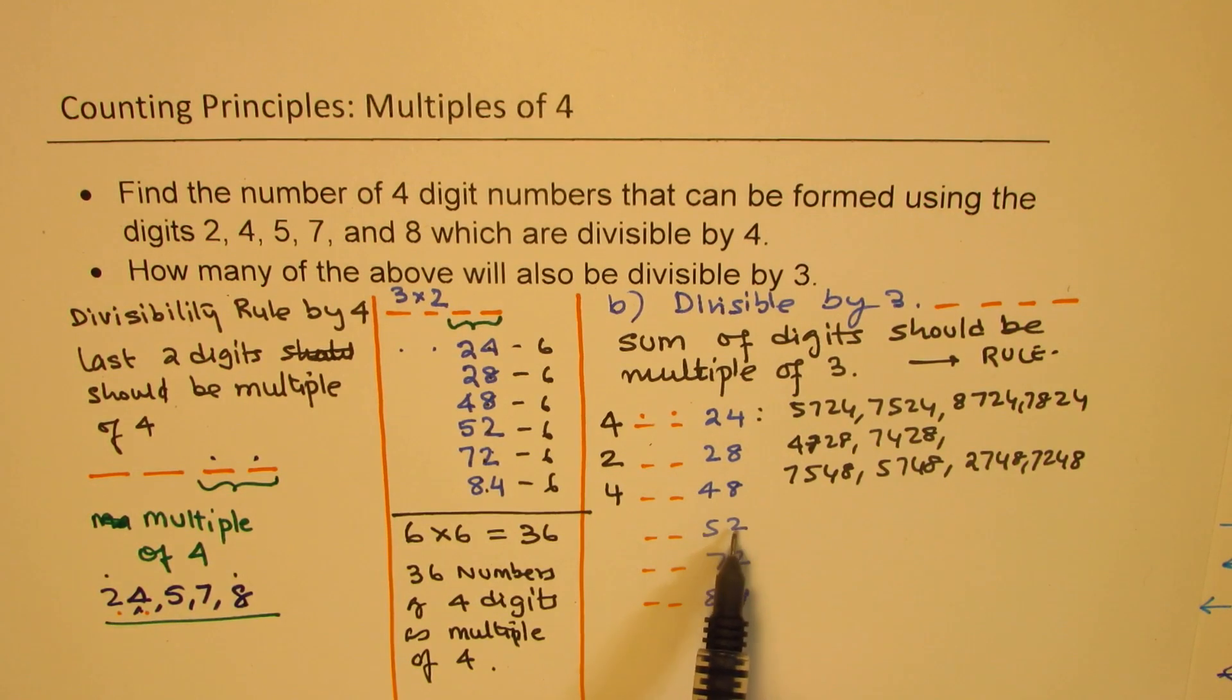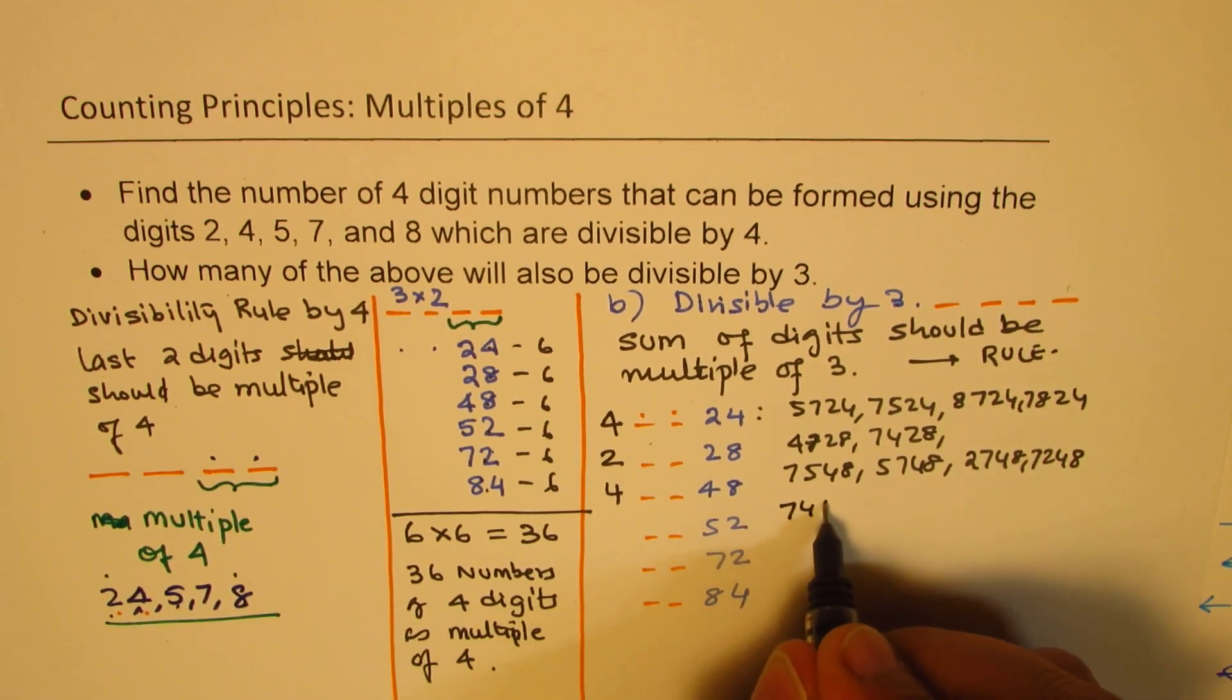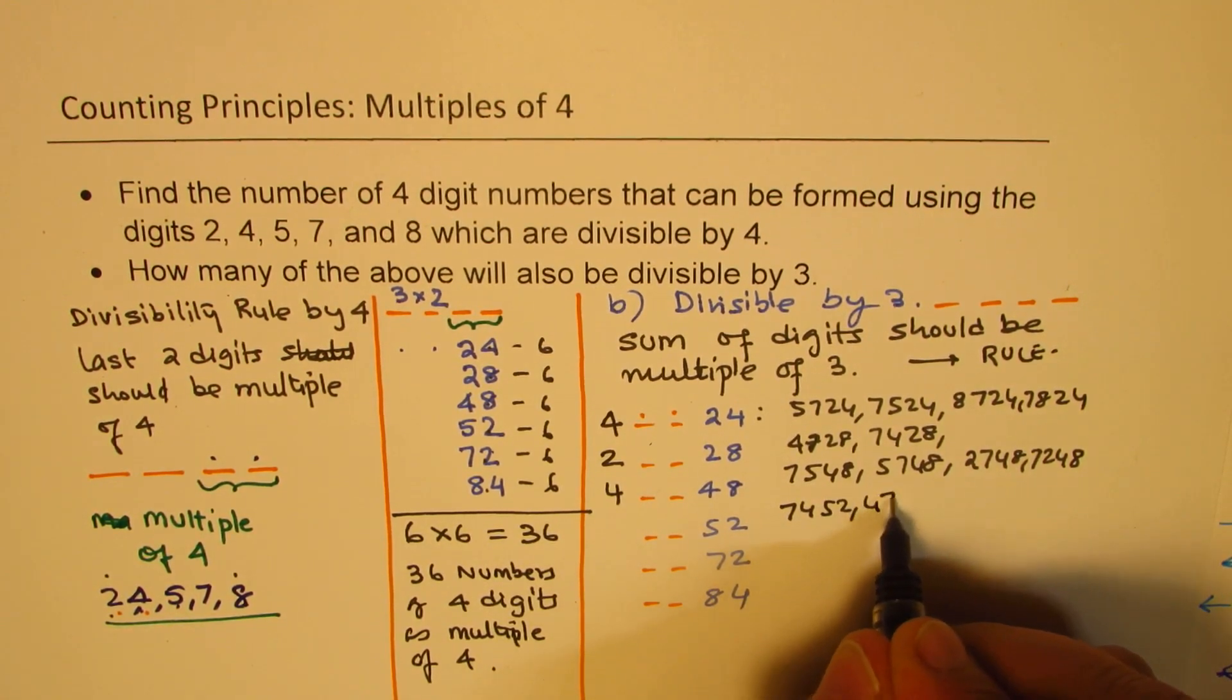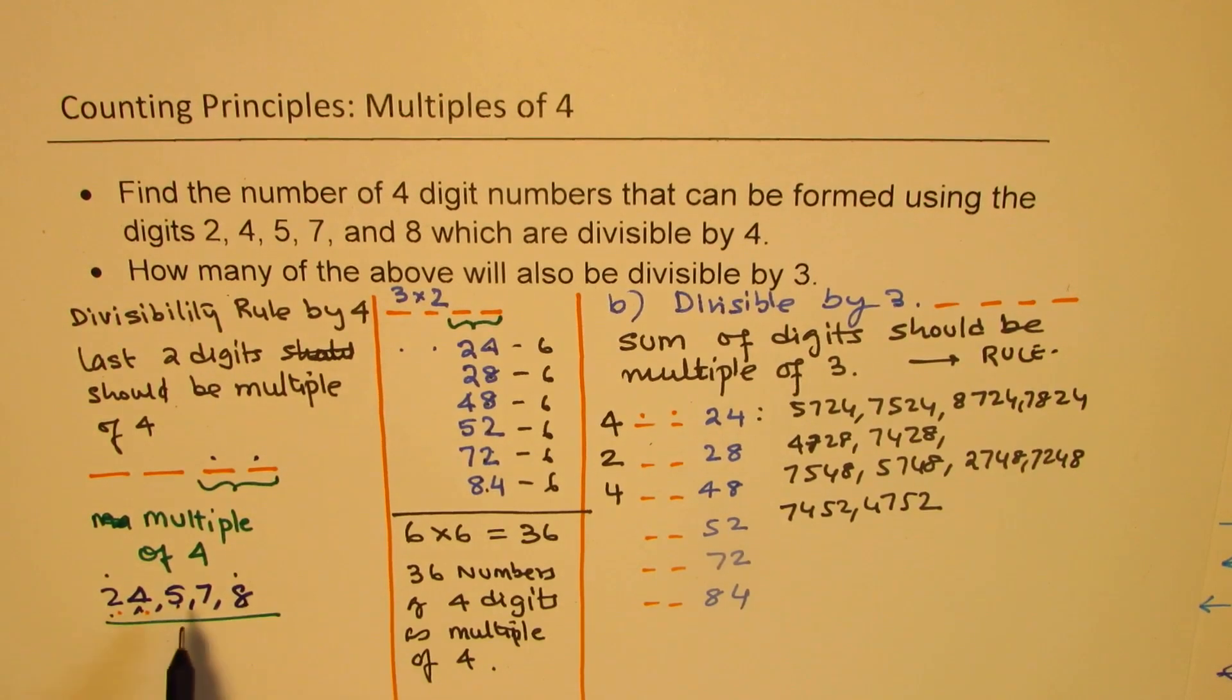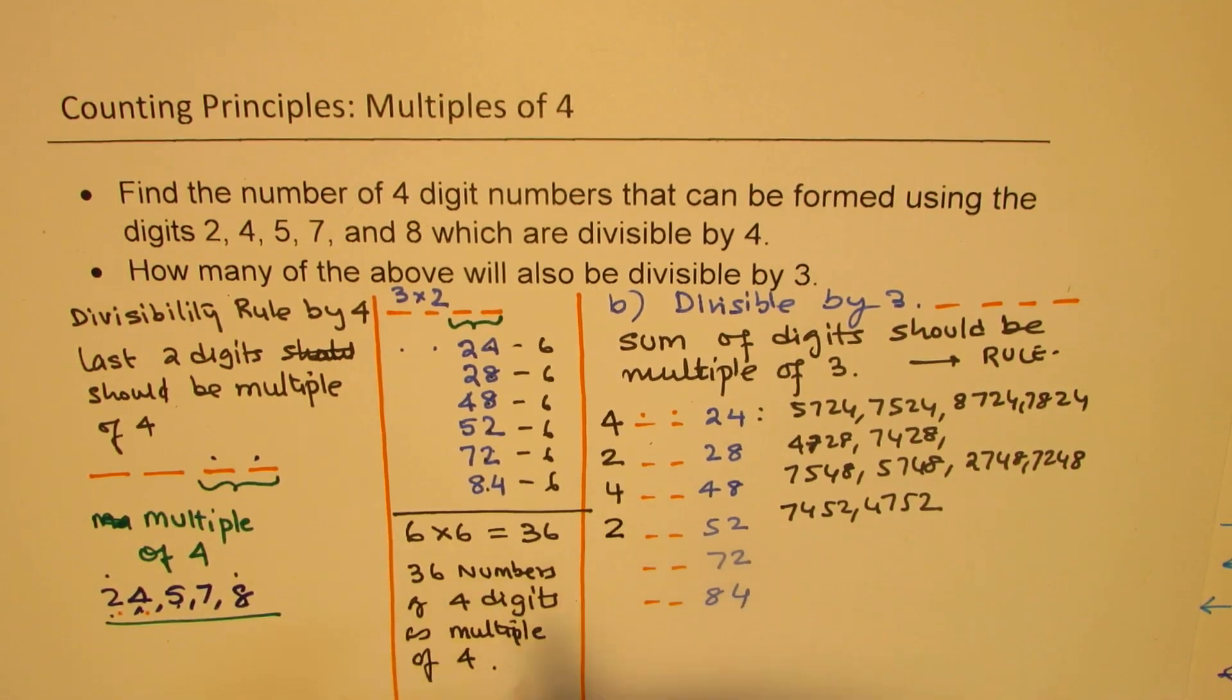52. 5 plus 2 is 7. So if I take away 52, 7 and 4 is 11. 7 and 11 is 18. That works. So we have got 74, 52, and 47, 52. If I take 4 and 8, that will not work. 8 and 7, 15, that will not work. So these are the only two combinations.